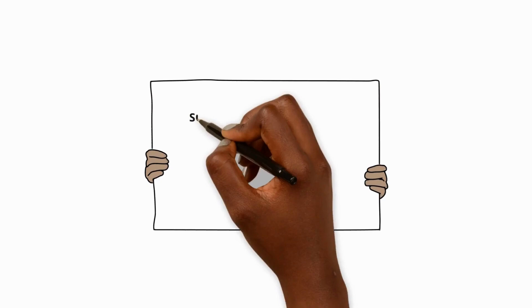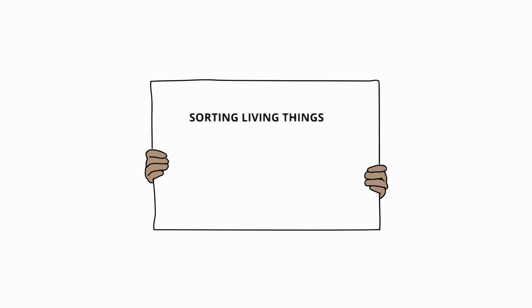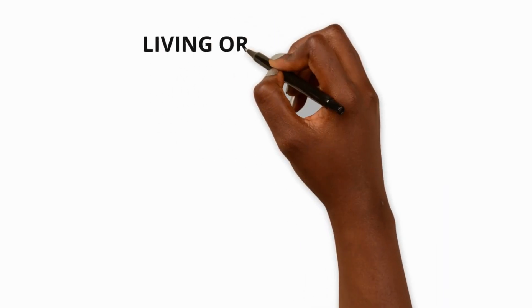Firstly, sorting living things. There are billions of things on earth. To make sense of them we can start simply by asking if something is living or non-living.